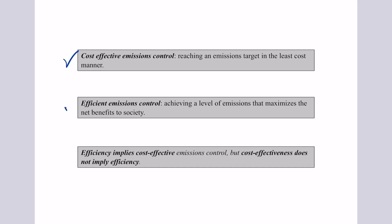Efficient emissions control, which we spent quite a bit of time on, is the level of emissions that maximizes the net benefits to society. That's the point where the marginal abatement costs equal the marginal damage — it's that balancing act. Importantly, efficiency implies cost-effectiveness: you can't have an efficient policy unless you reach that goal in the least cost way. But cost-effectiveness does not necessarily imply efficiency.